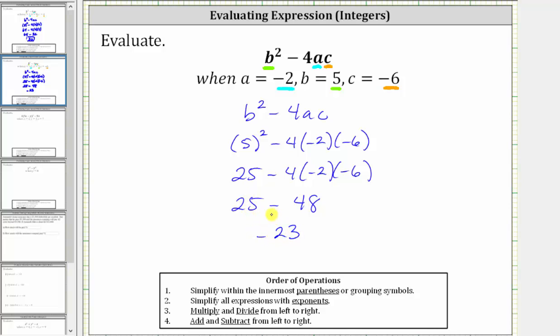Remember, if we need to, 25 minus 48 is equivalent to 25 plus negative 48, giving us the same result of negative 23.